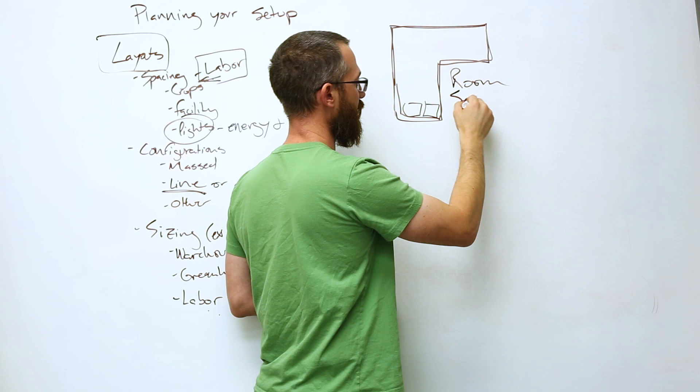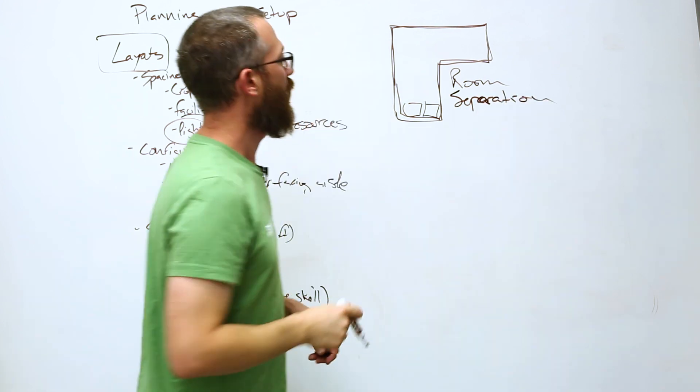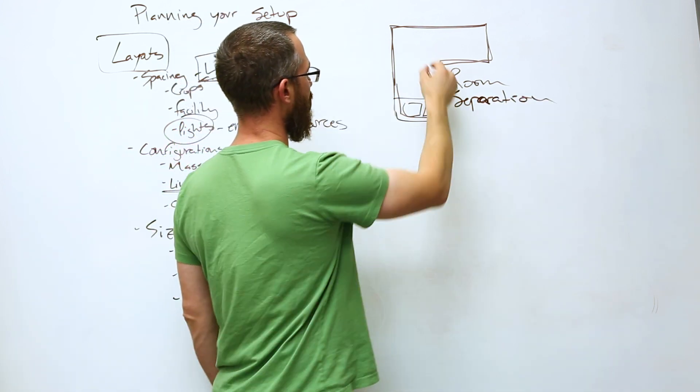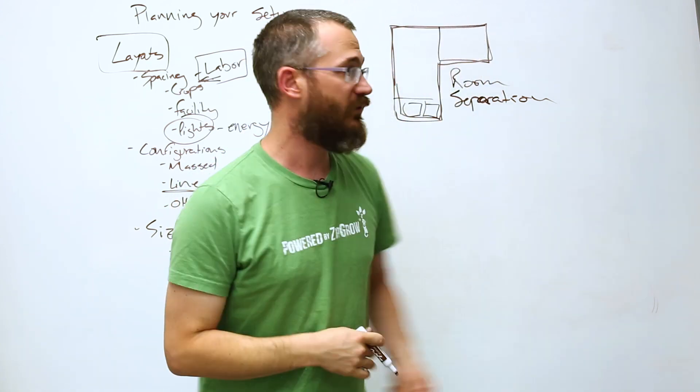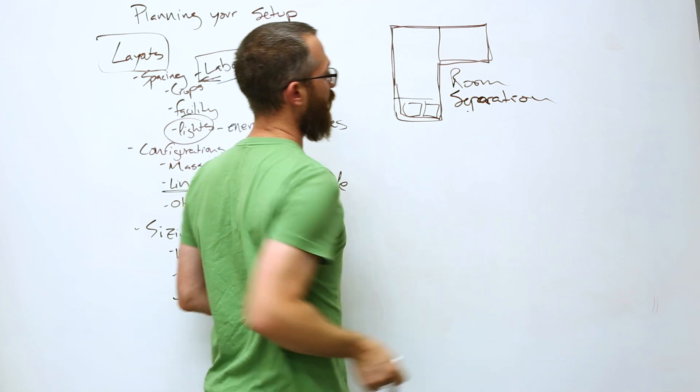Make sure you're accounting for separation if necessary. So if there are certain things that can't be connected or you don't want connected for environmental reasons, you're running two different zones, what have you, you need to have separation.